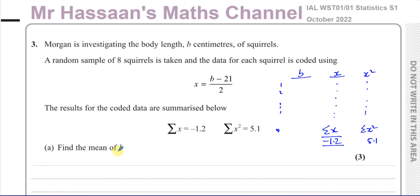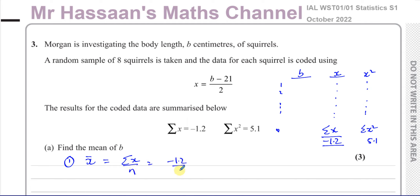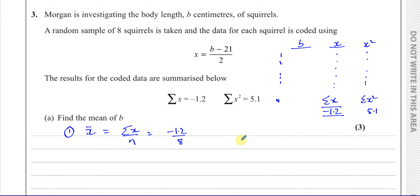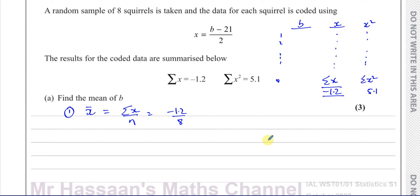It says find the mean of b, so we're going to find the actual mean of b. First we find the mean of x. The mean of x equals the sum of all x values divided by the number of entries, so that's minus 1.2 divided by 8. I'm going to leave it in that form and then use it to find the mean of b.